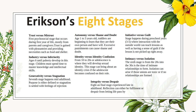Autonomy versus shame and doubt is from age one to three. Toddlers are beginning to learn that they are their own person and that they have will. Excessive punishment could lead to shame and doubt, and that carries into adulthood. Initiative versus guilt is the preschool years, ages three to five. Interactions from the outside world, including teachers, can help teach lessons, as well as create a sense of guilt if those lessons aren't learned right away.